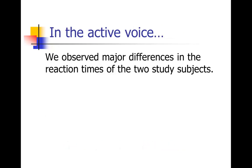Hopefully you got a similar answer to mine. To turn that one into the active voice, you had to recognize that there actually wasn't a subject in that sentence. So you had to guess — probably this was something in the results section of a scientific manuscript. So we can either put 'the authors,' 'the researchers,' or just 'we' if it's written from the researchers' point of view. You have to add a subject: 'We observed' — or 'the scientists observed' or 'the authors observed' — 'major differences in the reaction times of the two study subjects.'